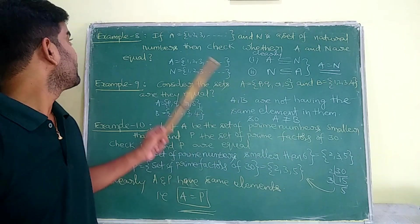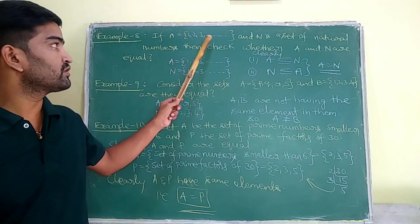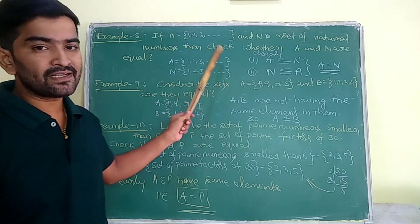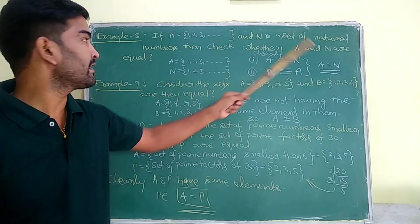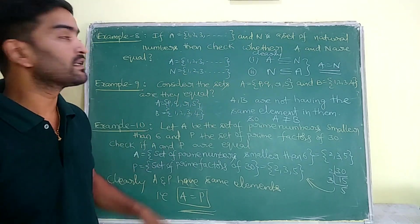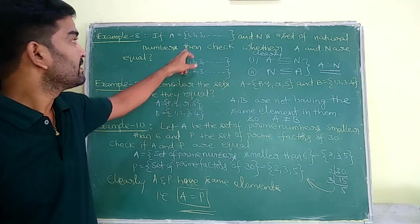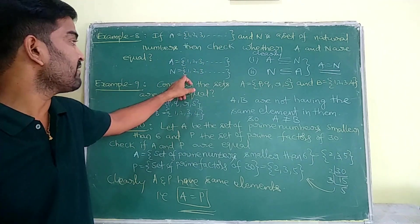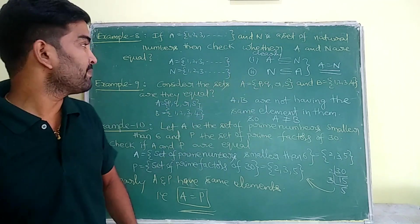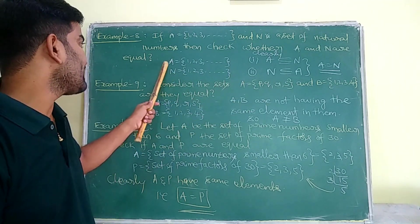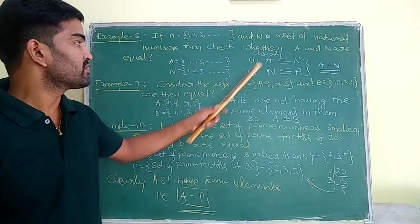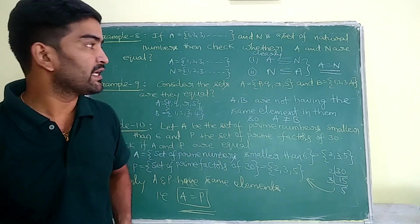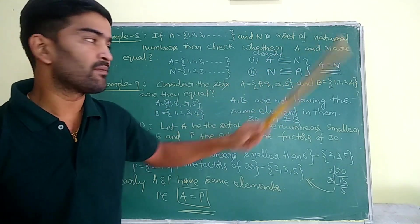Example 8: If A = {1, 2, 3, ...} and N is the set of natural numbers, check whether A and N are equal. A = {1, 2, 3, ...} and natural numbers = {1, 2, 3, ...}. Since A and N have the same elements, A ⊆ N and N ⊆ A, so A is equal to N.